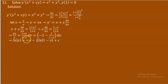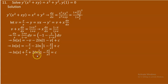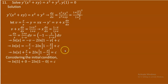Now back-substitute v = y/x. This gives ln|x| − y/x + 2 ln|1 − y/x| = C as the general solution. Applying the initial condition y(1) = 0: substituting x = 1, y = 0 gives ln(1) − 0 + 2 ln(1) = C, and since ln(1) = 0, we find C = 0.